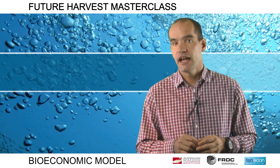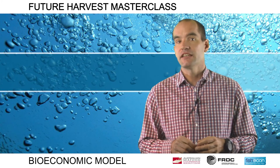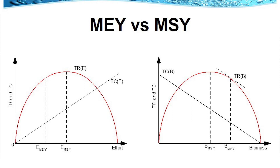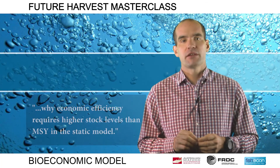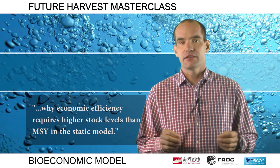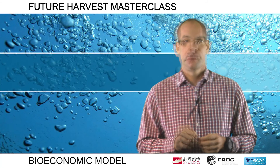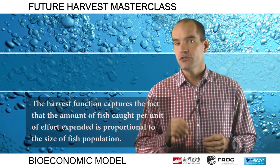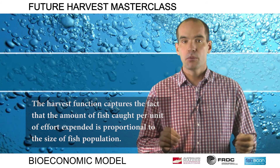We now compare the level of effort, harvest and rent that maximises economic yield with the levels attained with the goal of maximum sustainable yield, MSY, in our static model. From the figures shown here, we can see that the level of effort that maximises the sustainable catch, labelled as E-MSY, is greater than the level that maximises economic yield. Furthermore, the MSY harvest policy will result in a lower return to the fish stock and a lower level of biomass. MSY will, however, result in higher fish catches. It is important to be clear about why economic efficiency requires higher stock levels than MSY in the static model — a goal based solely on biological considerations. The answer lies in understanding the human part of the bioeconomic model, that is, the harvest function, which captures the fact that the amount of fish caught per unit effort expended is proportional to the size of the fish population.